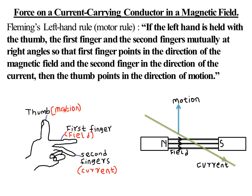In Fleming's left-hand rule, we strictly use the left hand — in the right-hand grip rule we used the right hand. Hold the left hand such that the thumb is perpendicular to the first finger and also perpendicular to the second finger. The angle between the thumb, first finger, and second finger should be 90 degrees — that is what we mean by mutually at right angles.